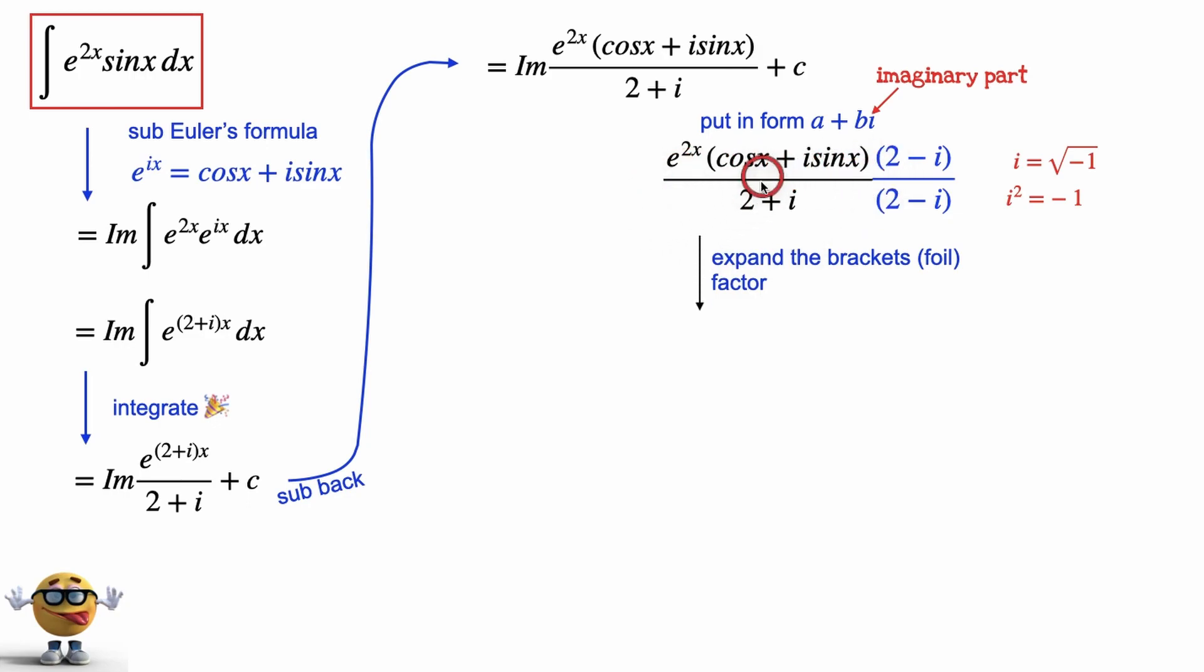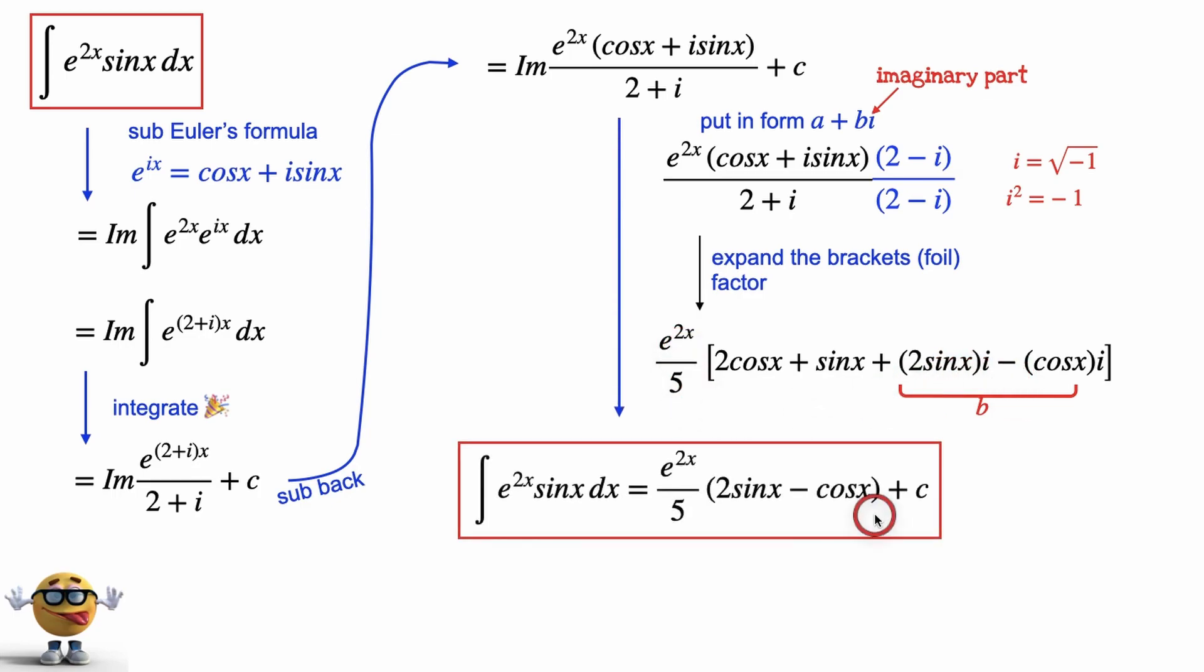What you'll get after simplifying this and doing some algebra is e to the 2x divided by 5 times the real part 2 cosx plus sine plus the imaginary part 2 sinx i minus cosx. And this part right here is our imaginary part b that we want with this factor right here. And that's it, my friends, and we're done.